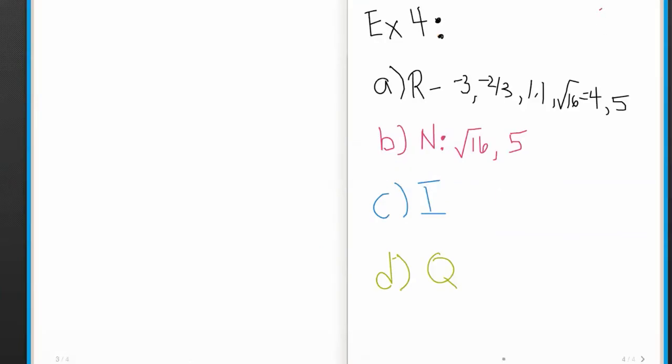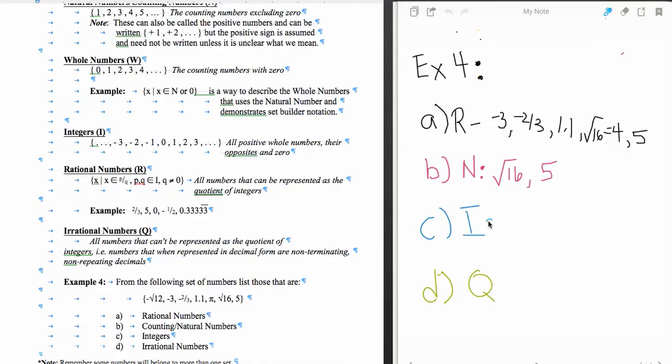Now the next one is my integers. My integers, I'm looking for positive or negative whole numbers essentially. Negative square root of 12, no, definitely not. Negative 3, yes, so negative 3 is an integer. Negative 2 thirds, no, it's not a whole number. 1.1, again, no.